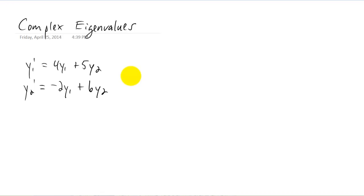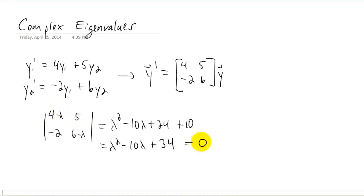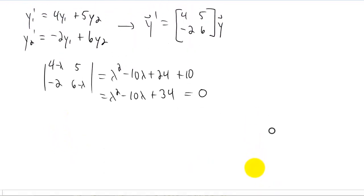Now I want to talk about complex eigenvalues — what happens when you get a complex eigenvalue as you're solving one of these differential equations. Here's an example, and as you know, you can rewrite this system of differential equations. You want to start by finding the determinant of A minus lambda I, set that determinant equal to zero, and use the quadratic formula to solve for lambda.